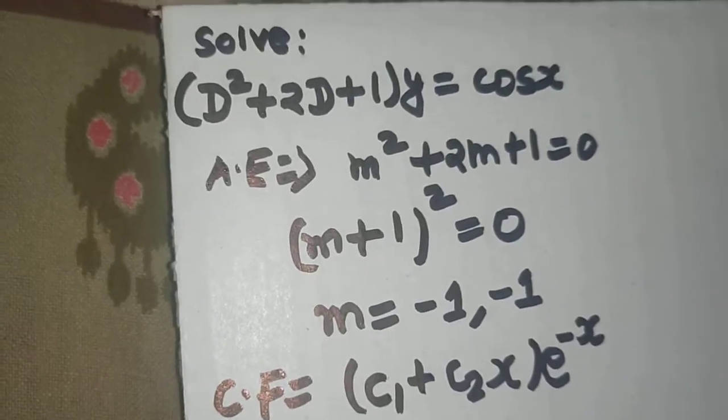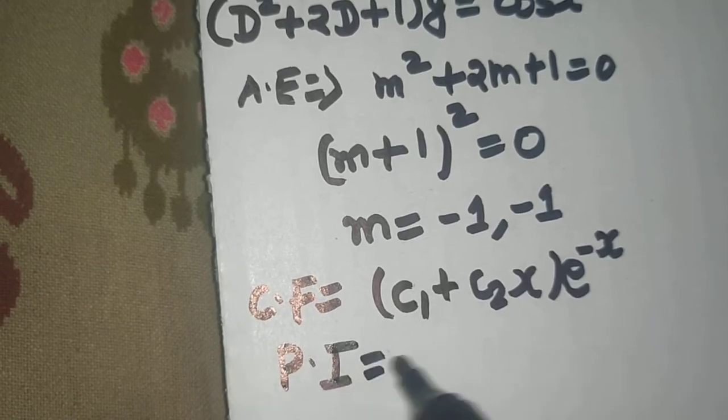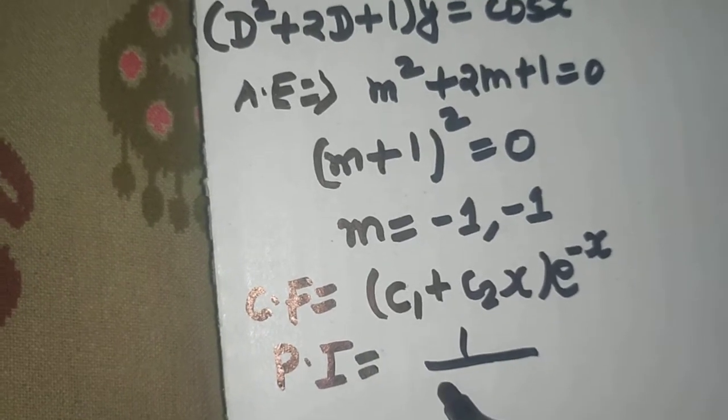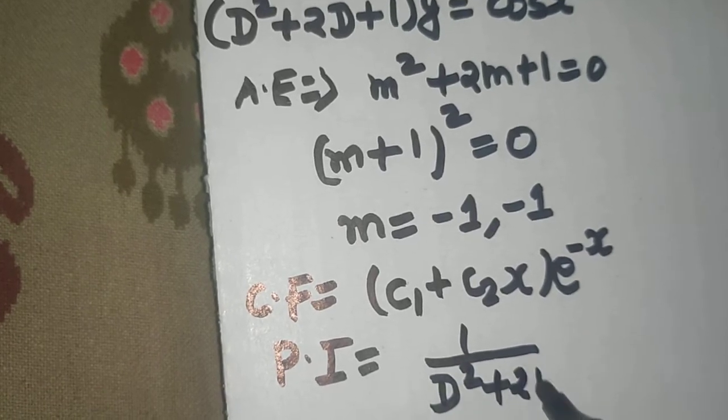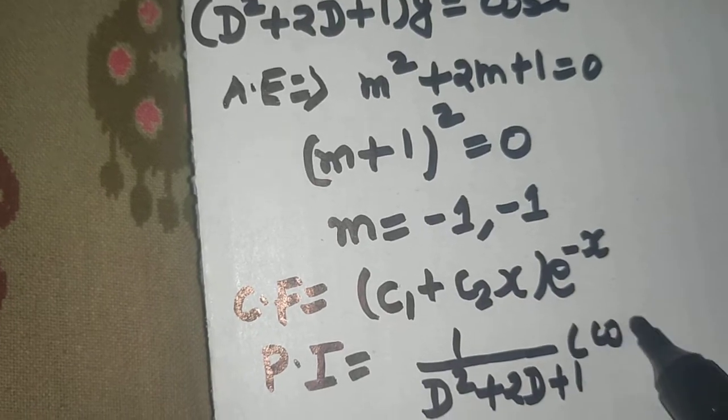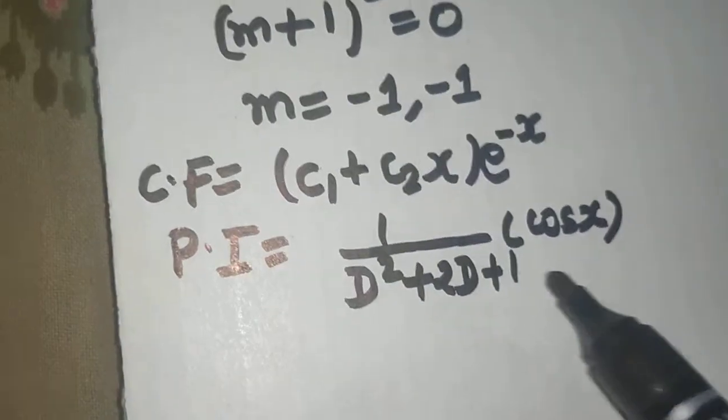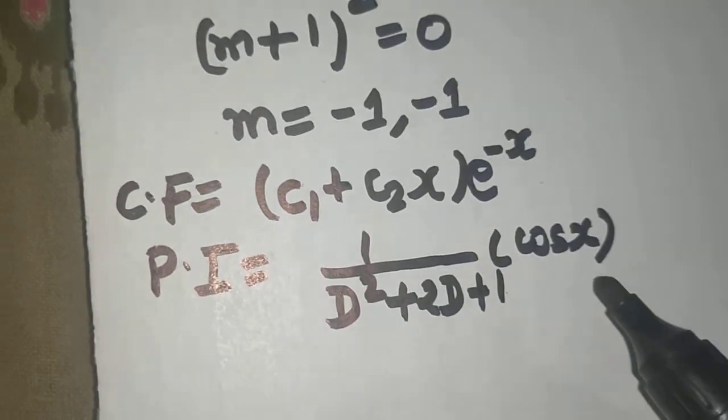Now coming to the particular integral. So what we do for particular integral, we find it by 1 upon f of d, which is d square plus 2d plus 1 that will operate on cos x.